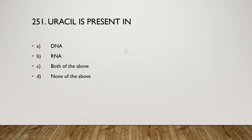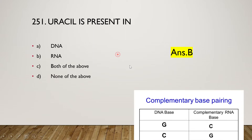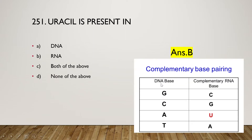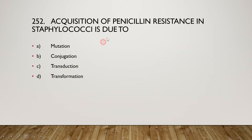The right answer is option B, that is RNA. Uracil is present only in RNA, not in DNA. The DNA bases are guanine, cytosine, adenine, and thymine, and the complementary RNA bases are cytosine, guanine, uracil, and adenine.